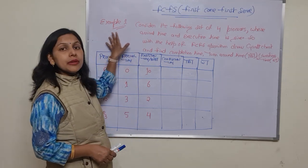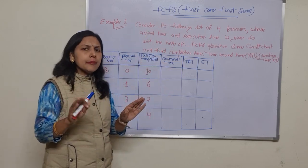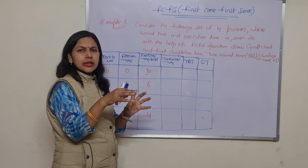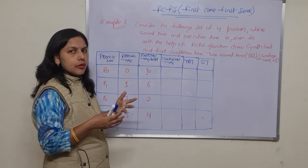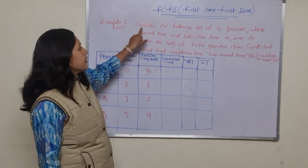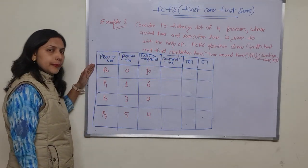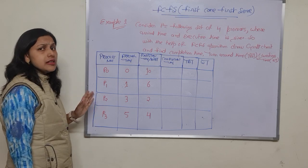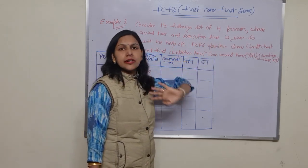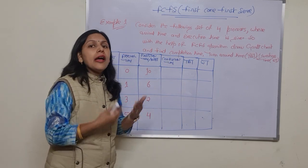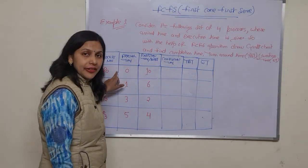First, check this question — this is Example 1, and I will discuss three examples regarding FCFS with different types of scenarios. In this first example, consider a set of four processes: P0, P1, P2, and P3. For each process, the arrival time and the execution time are given. Arrival time means when the process has arrived — that is, when the user started the process.